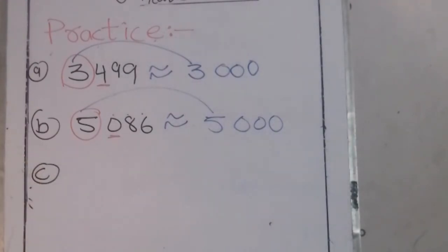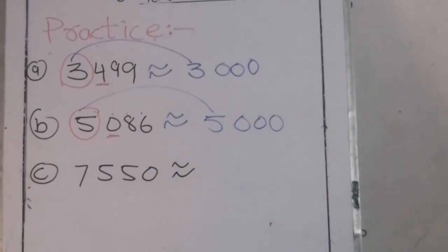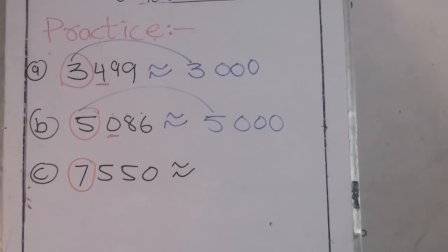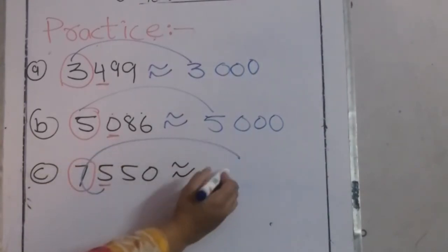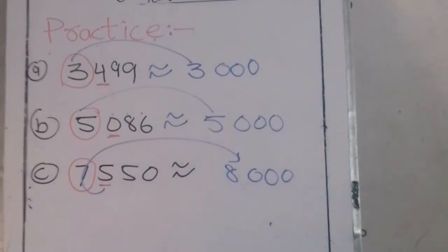Part C: 7,550. There are two steps for solving the question. First, circle the digit at the 1000 place. Step 2, underline the digit next to the circled digit. Now look at the underlined digit — it is a strong number, and it pushes up 7. The 7 becomes 8. All digits after the circled digit become 0 in the final answer.